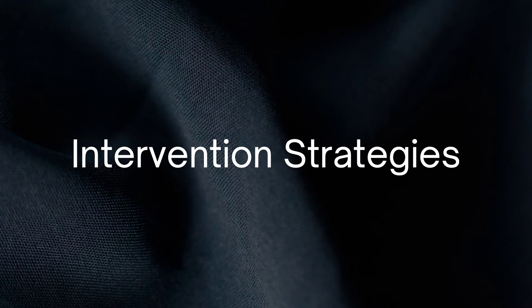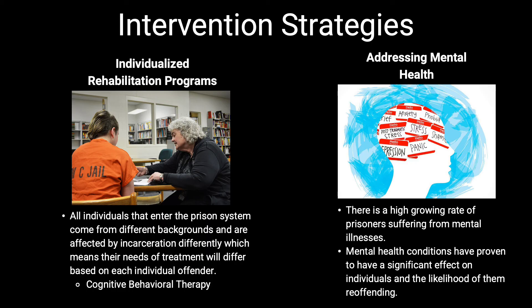Next, I will list four intervention strategies prisons can use to better help the well-being of inmates while also lowering recidivism rates. The first intervention strategy is individualized rehabilitation programs. All individuals entering the prison system come from different backgrounds and are affected by incarceration differently, meaning their treatment needs differ. Cognitive behavioral therapy is one program prisons offer that helps offenders change the patterns of their individual behavior that led them to commit the crime in the first place. The next intervention strategy is addressing the growing concern of an inmate's mental health.